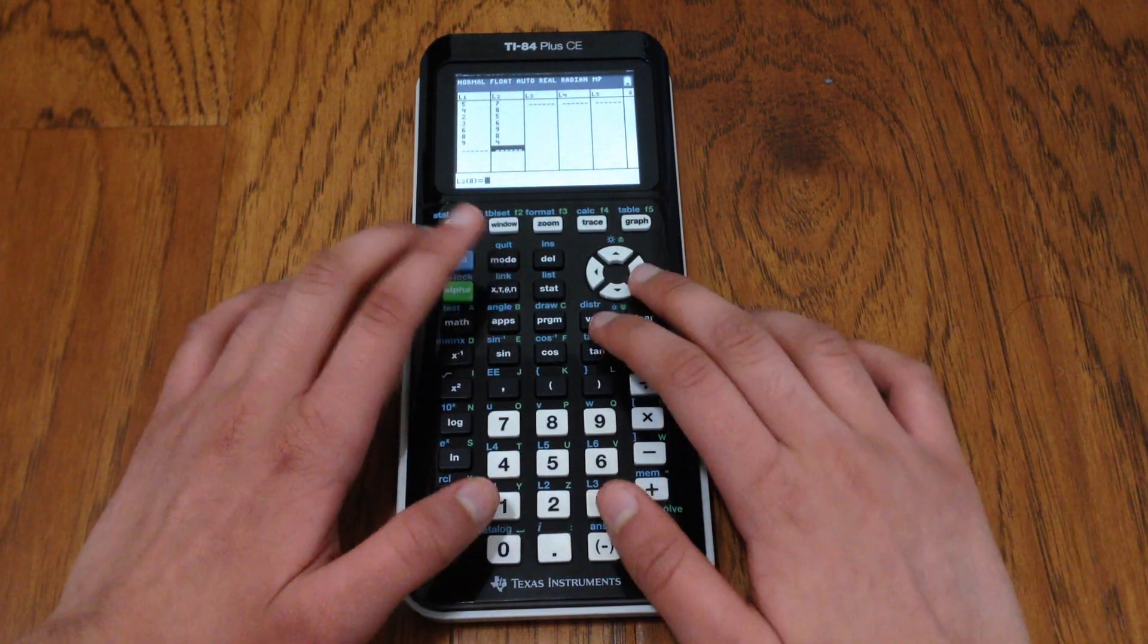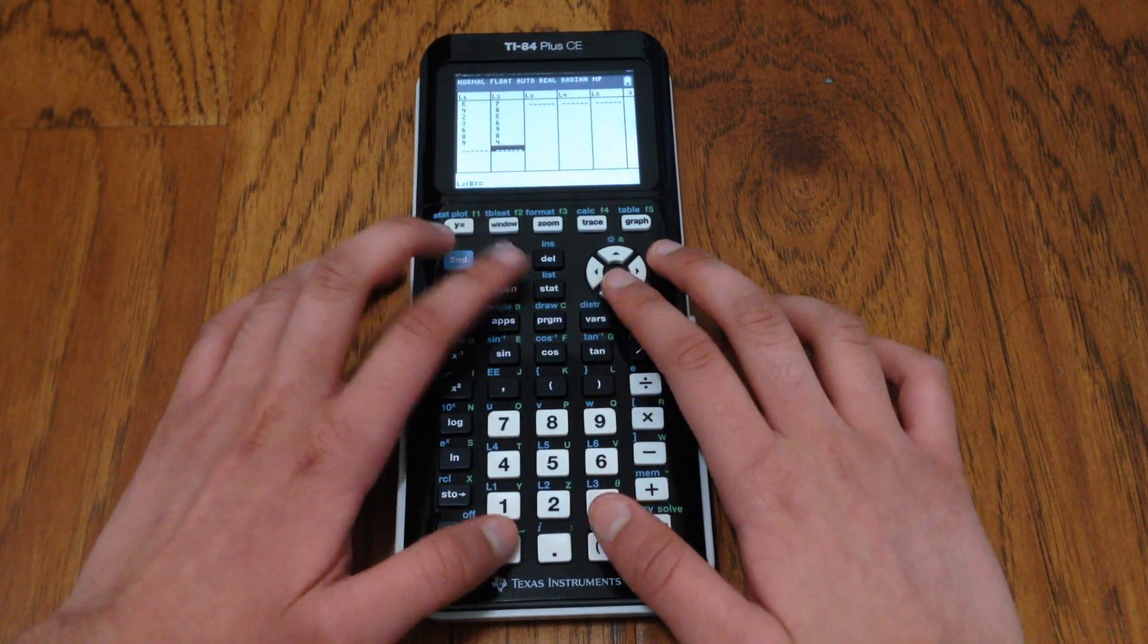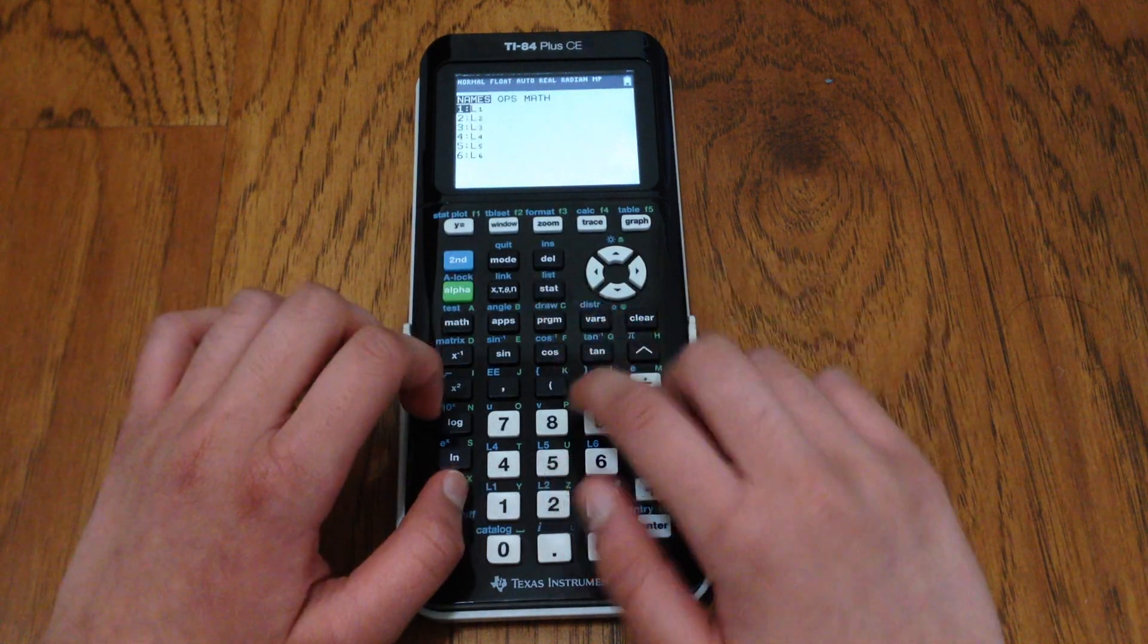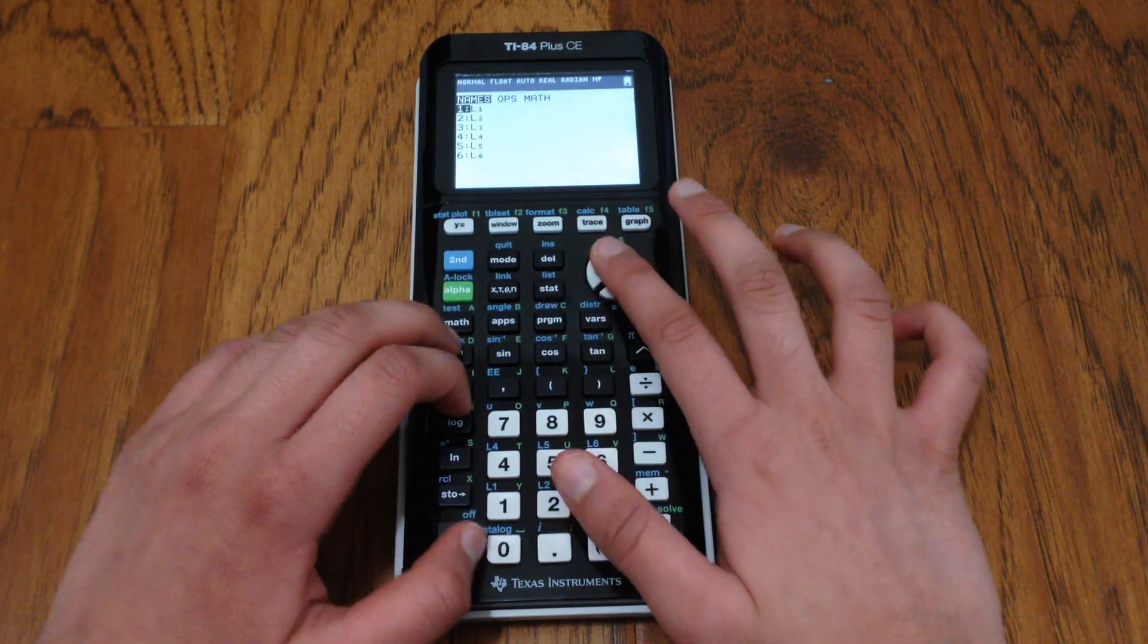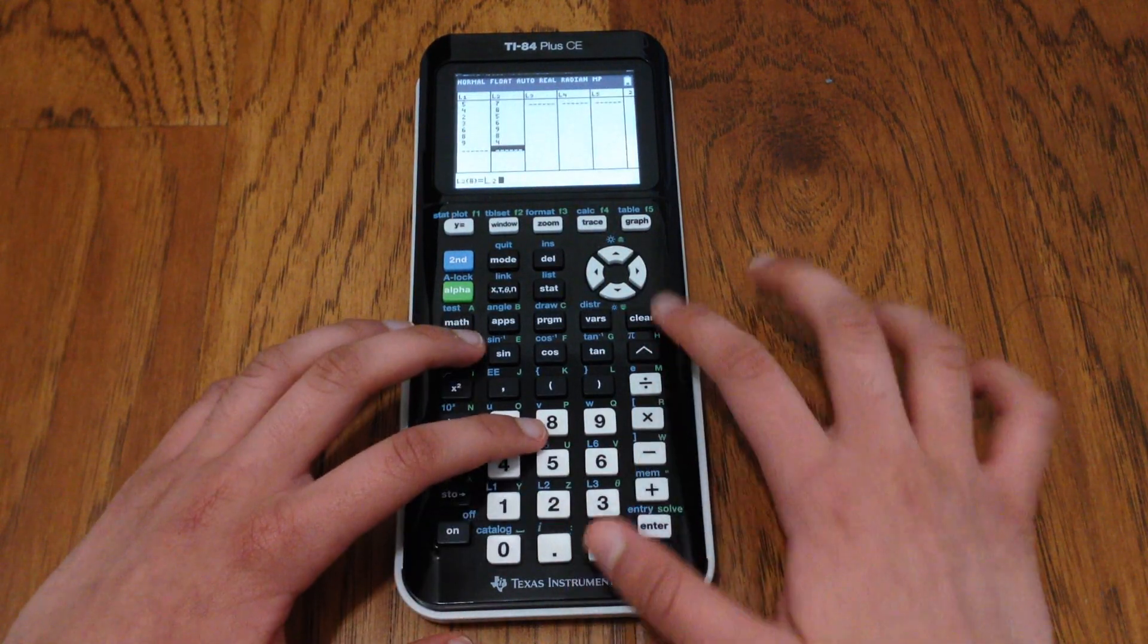Okay, so I just put something in there and what I'm going to do now is I'm going to hit second stat and here you can pick one of the lists and I'm just going to go with list 2.